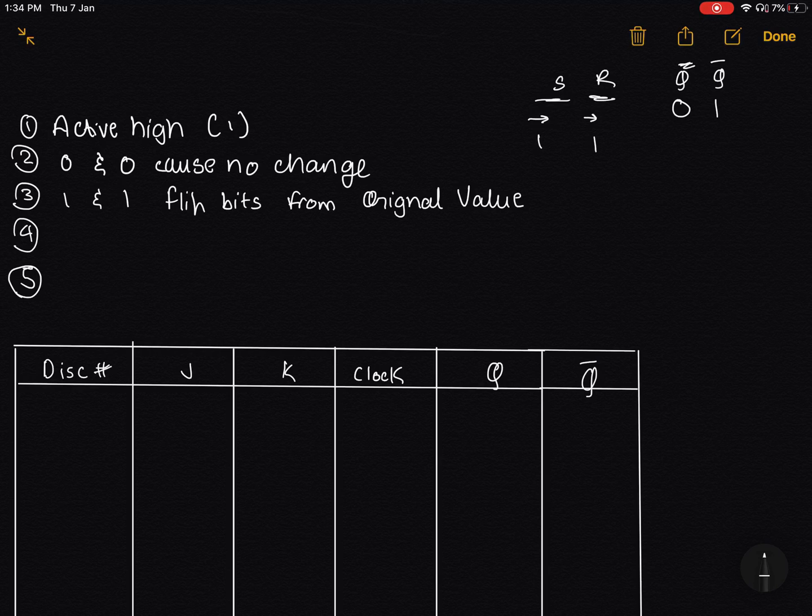So if Q is 0, it will become 1. If Q complement is 1, it will become 0. J to true, which is if J is 1, sets Q to 1.